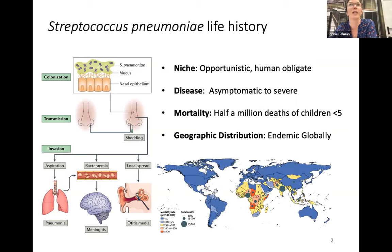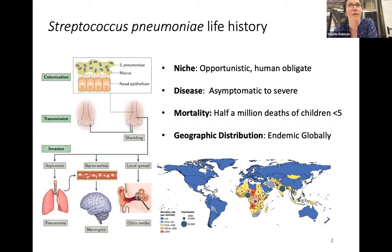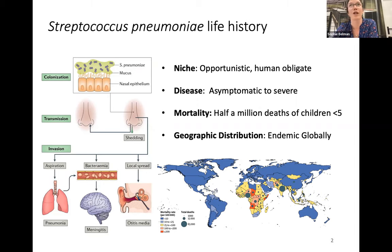It's endemic globally, but its highest prevalence is in low- and middle-income countries — sub-Saharan Africa and South and Southeast Asia. The carriage prevalence, so the asymptomatic carriage, is also highest in these places, ranging from 20% to 90% in some countries such as the Gambia. In high-income countries, the carriage prevalence is closer to 20%. This is typically measured in children, but the more we look in adults, the more we're seeing it, following the same trends with the inverse relationship to country income.